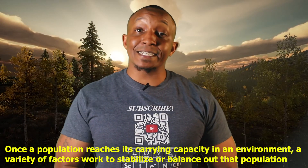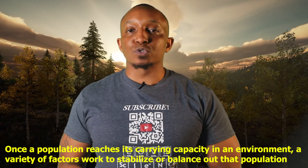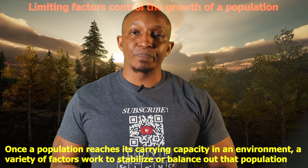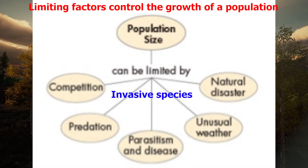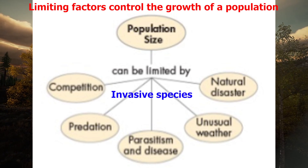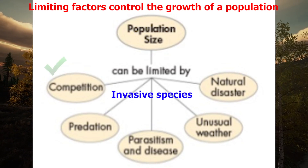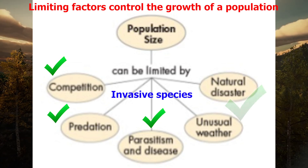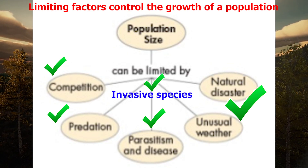In a nutshell, carrying capacity is the maximum number of individuals of a particular species that a specific environment can support. Once a population reaches its carrying capacity, a variety of factors work to stabilize or balance out that population. These factors are called limiting factors, and they control the growth of a population. The five factors that limit population size are competition, predation, parasitism and disease, unusual weather and natural disasters, and invasive species.